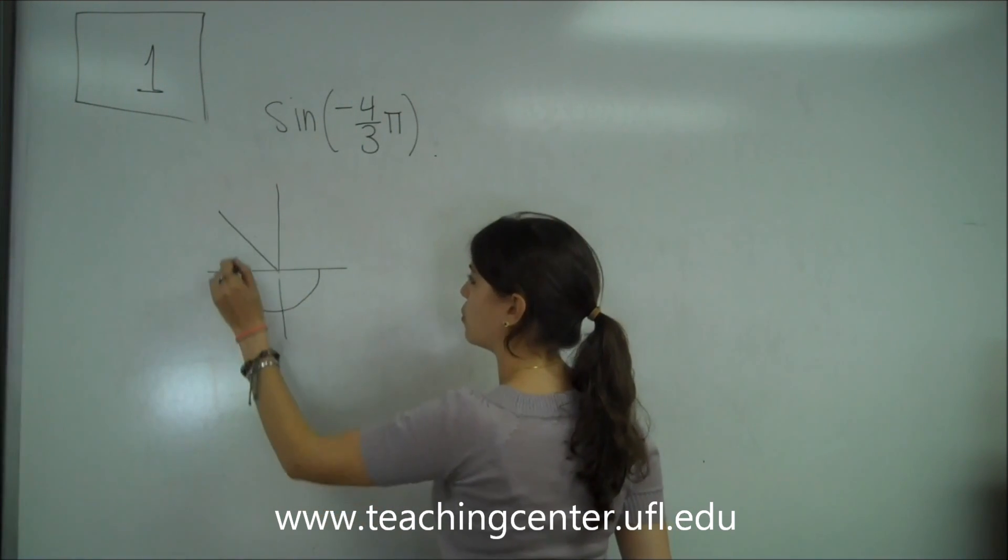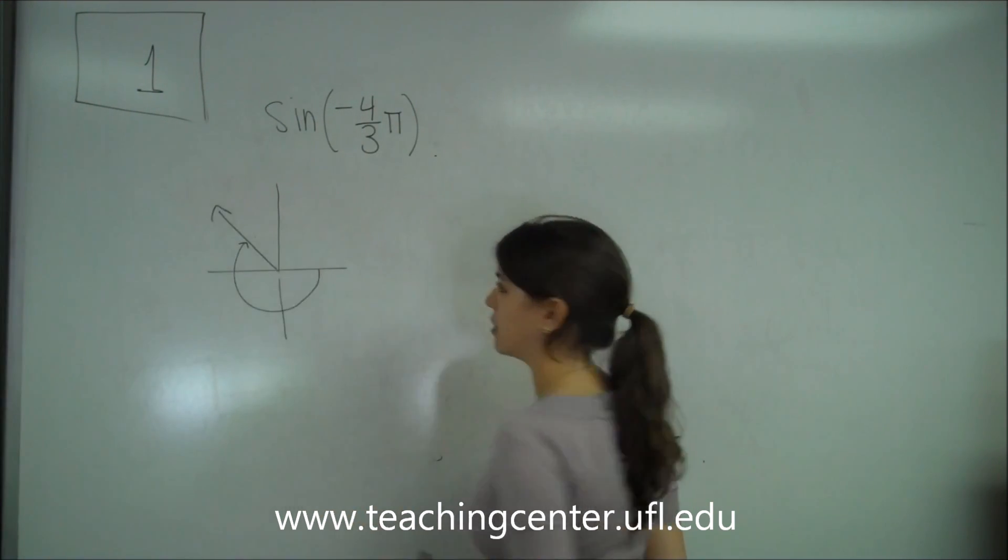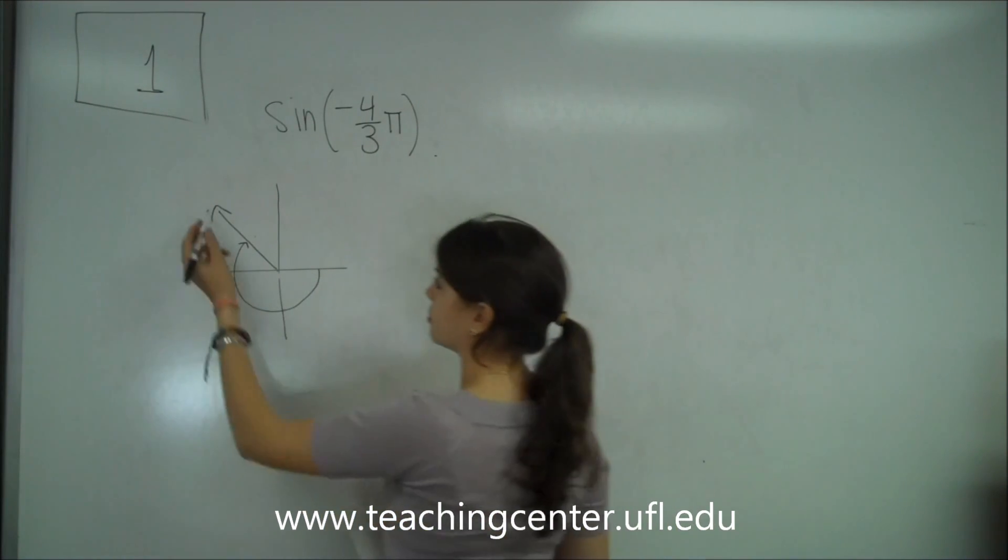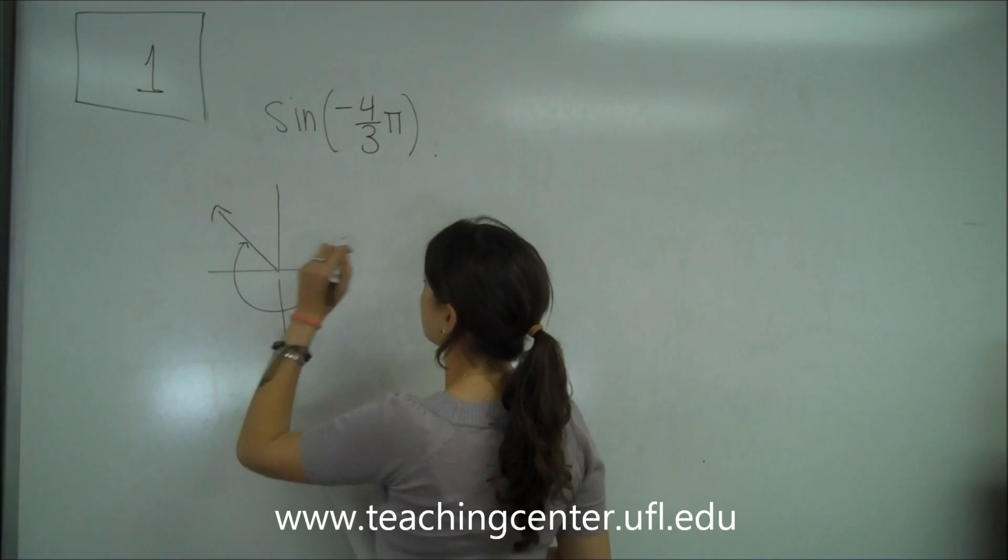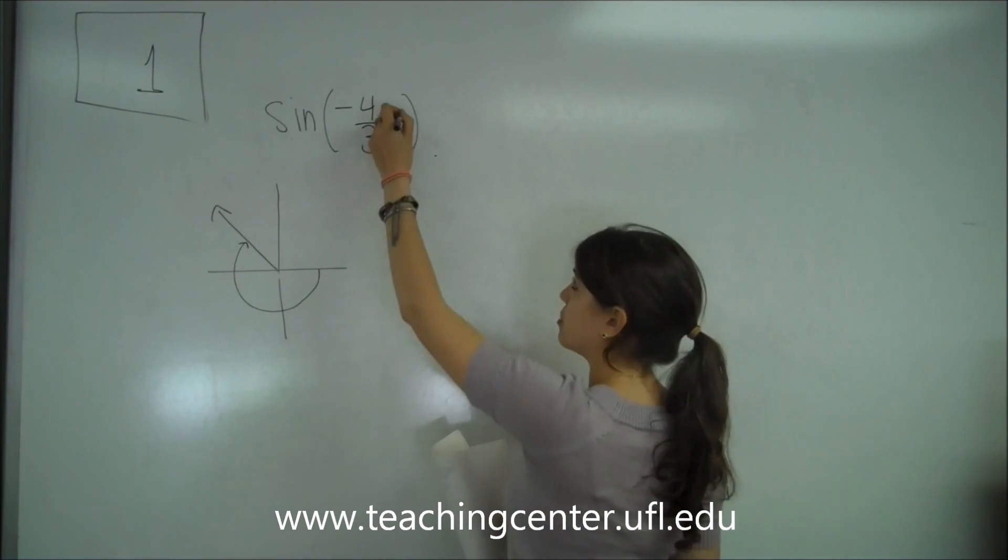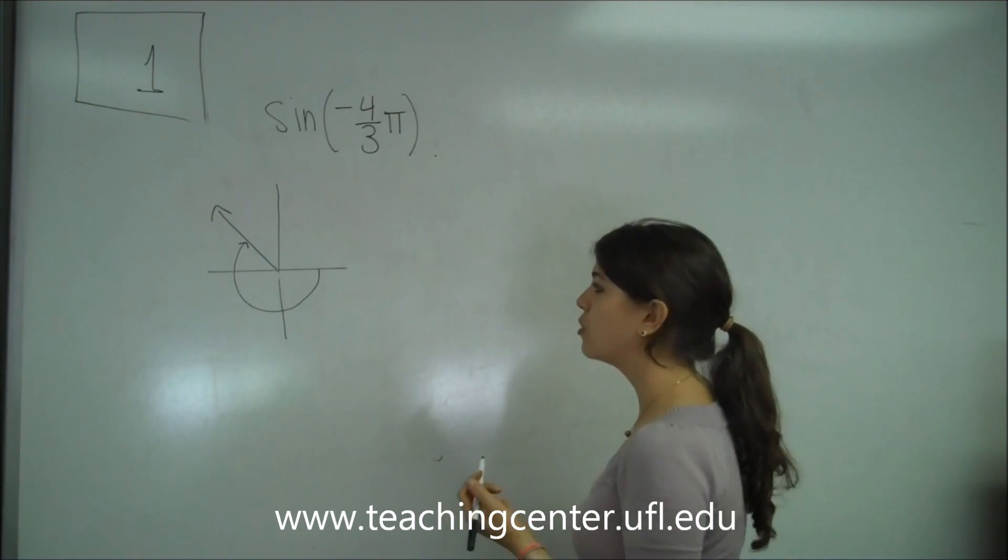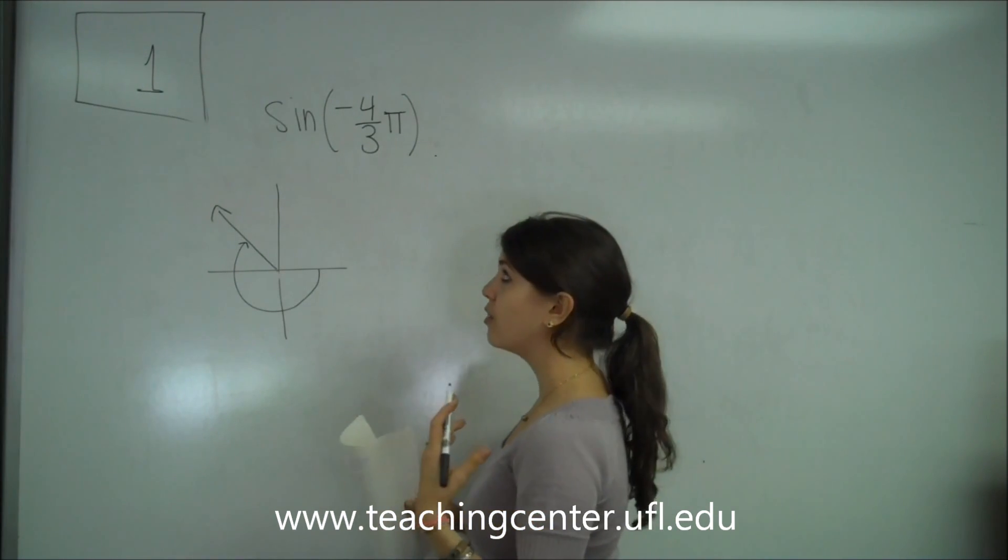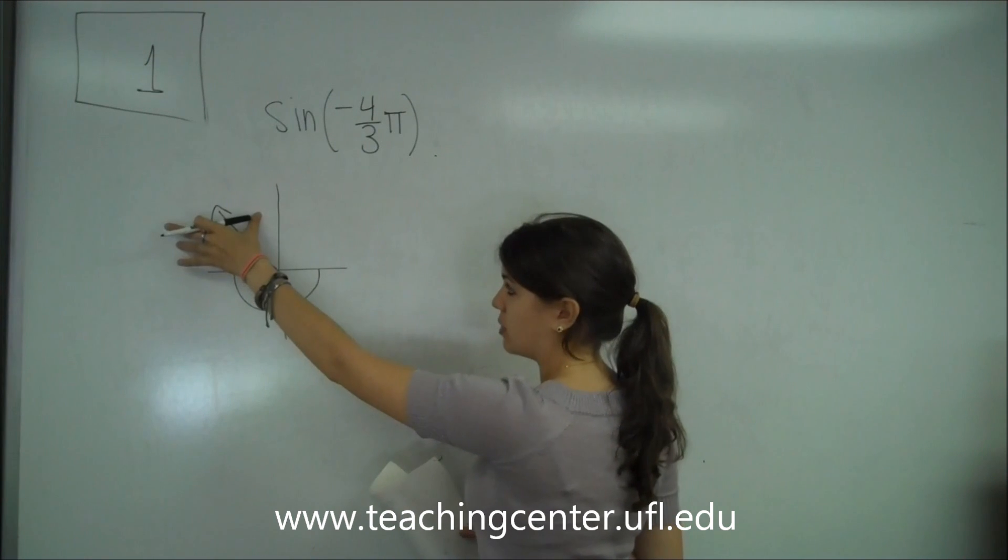So, if we went the right way, you know that it would have been on the third quadrant here, but since we're going the opposite way, let's go three quadrants down the opposite way, and we get to here. So, one, two, three quadrants. So it's somewhere in the second quadrant. It's negative four-thirds pi.